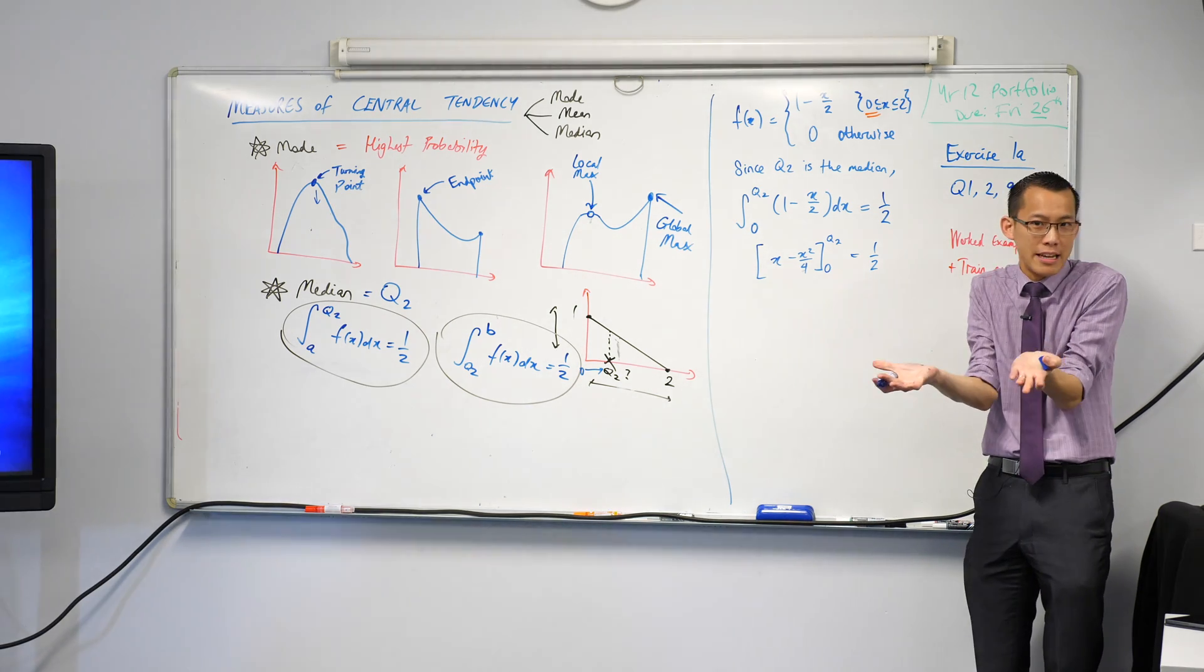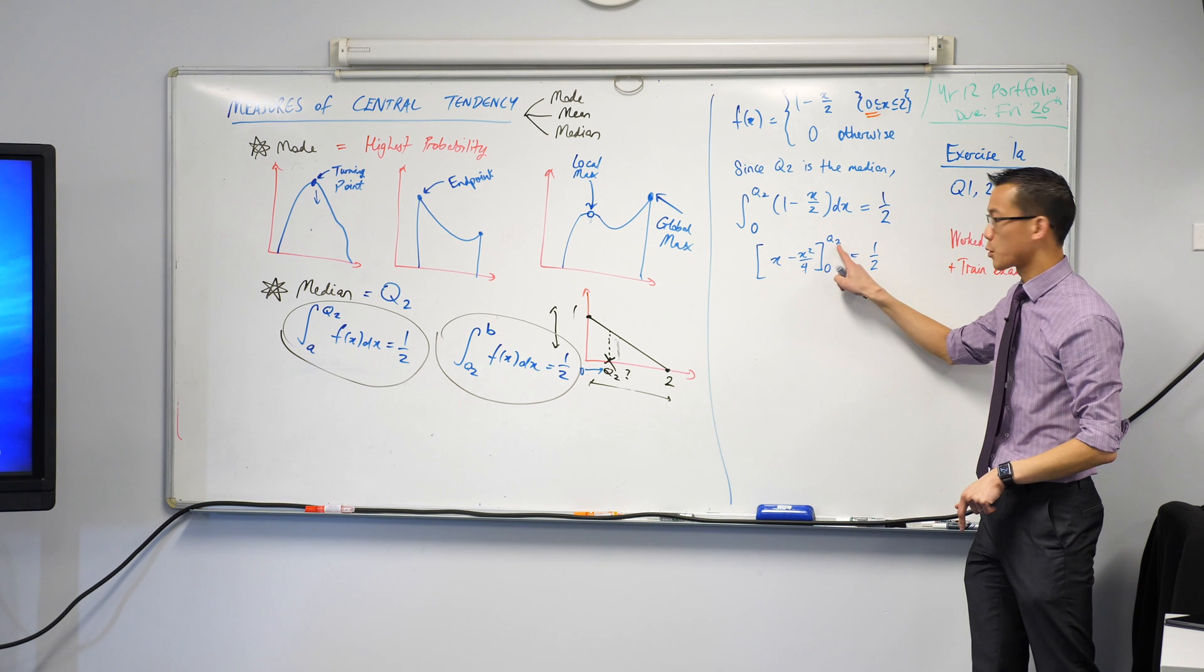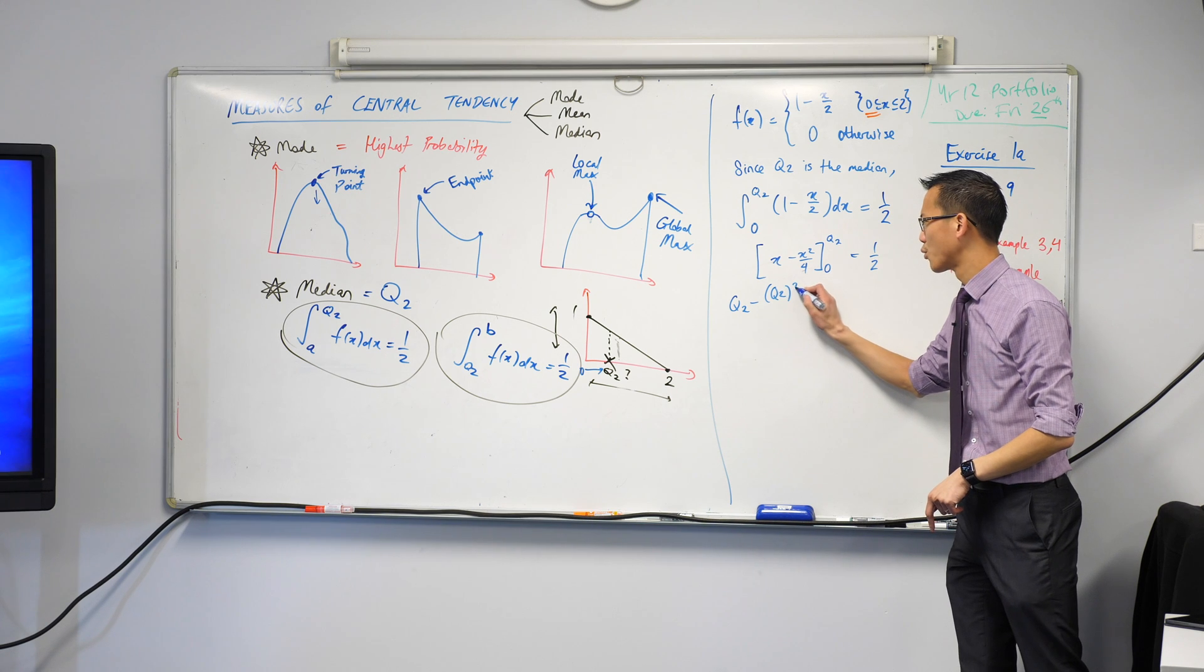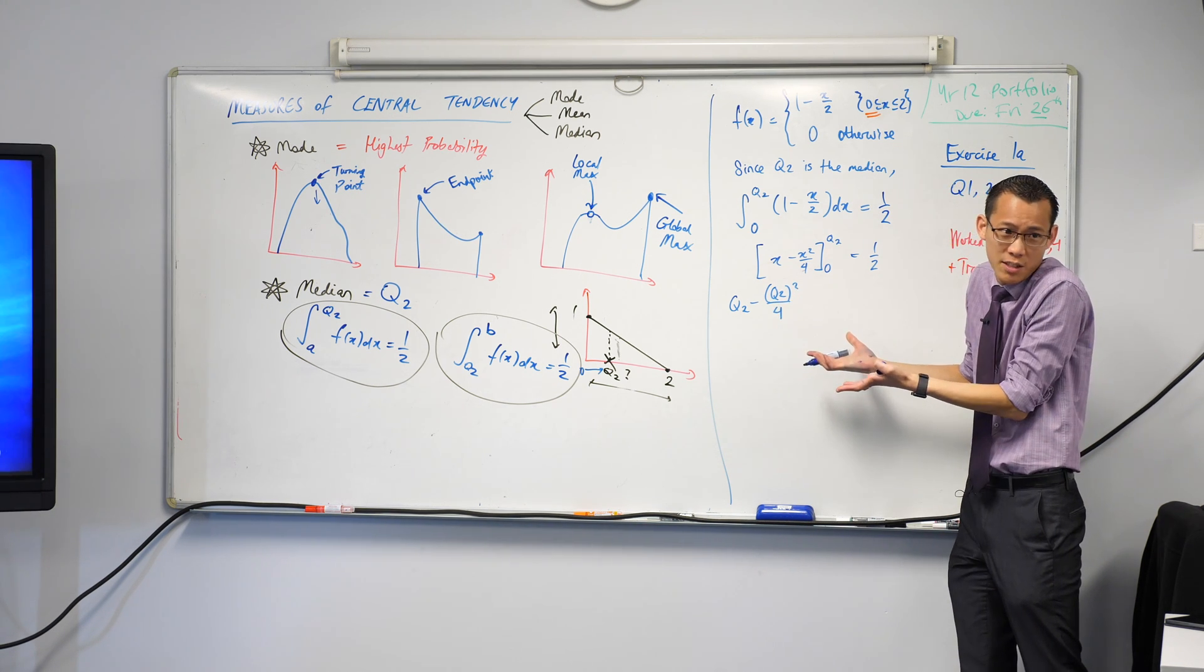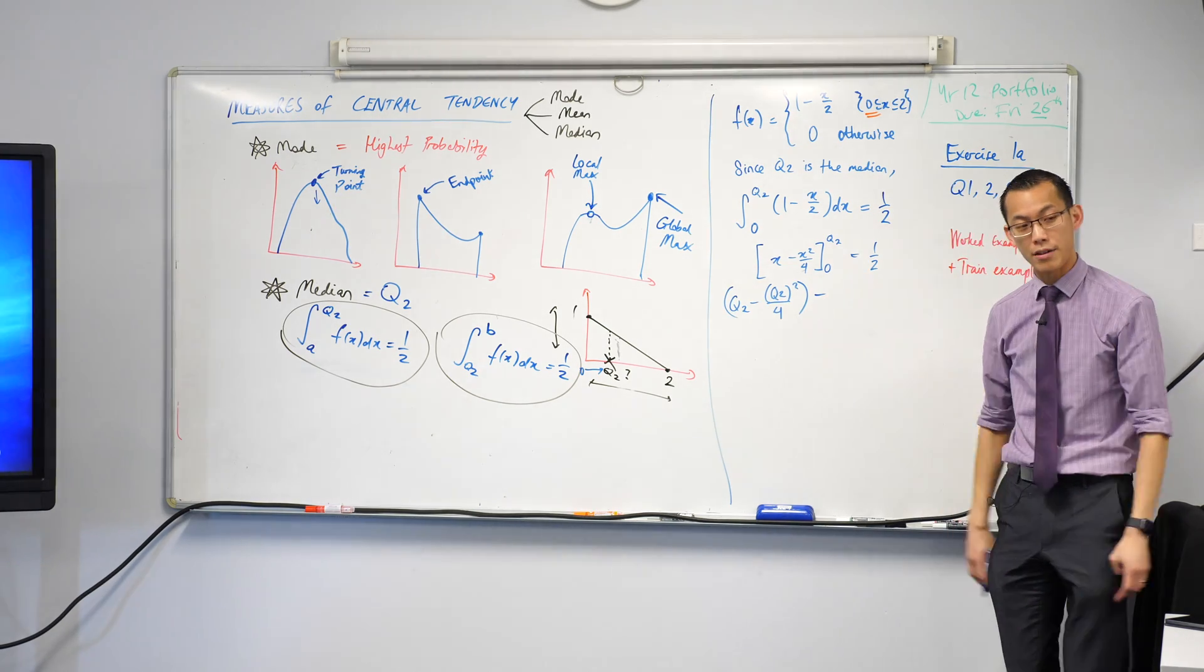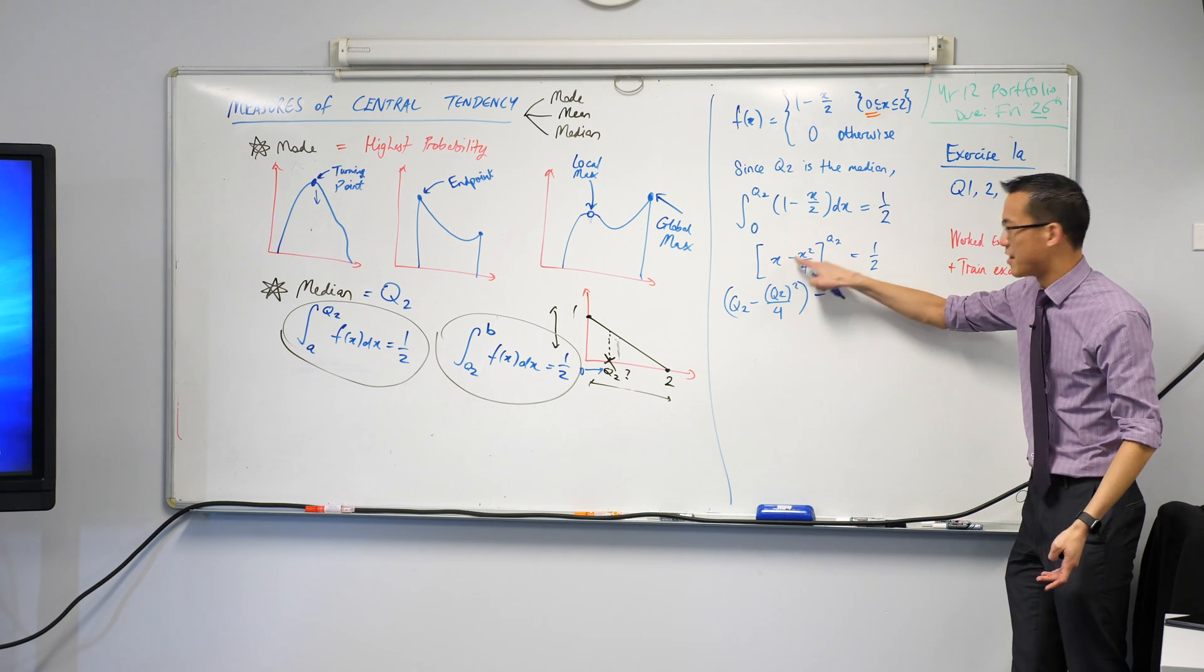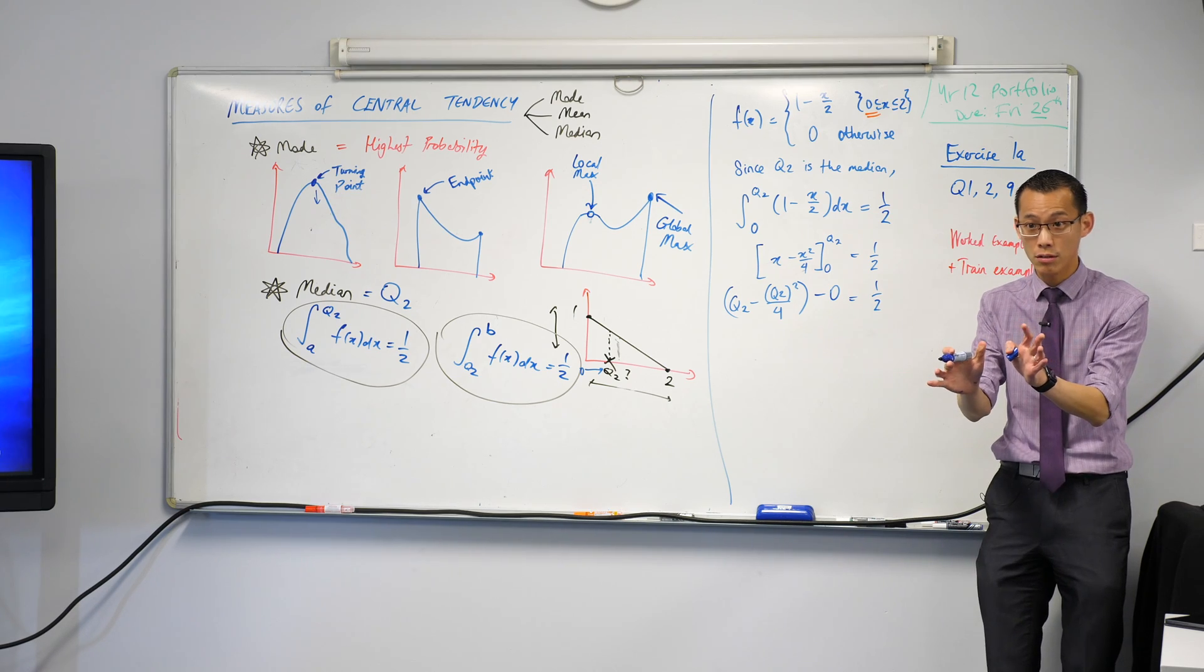So, now I've set up the goals. I need to integrate now. Can you help me work out what the primitive should be? x minus x squared on four. Very nice. There we go. Nailed it. One turns into x. Increase my power and divided by that new power. Everything looks good. I go from naught to this q2 business. And then that equals a half. So far, so good?